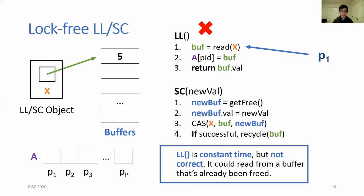But for those of you who are familiar with hazard pointers, you probably already see that there's a problem with the LL operation. What could go wrong is that process P1 performs the read of X and pauses before announcing the buffer that it saw. Now process P2 can come along and change X to point to a different buffer and then go on to recycle the buffer that process P1 is about to read from.